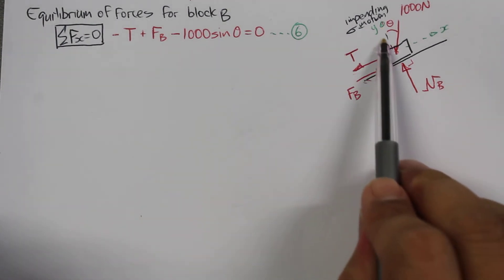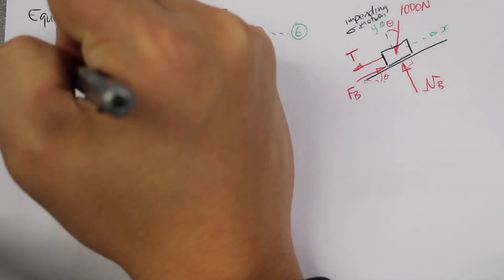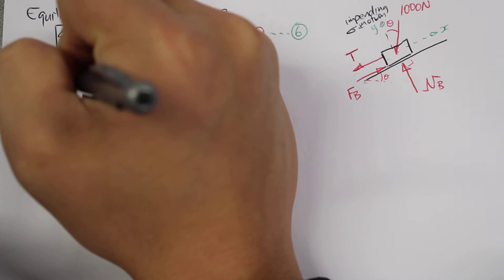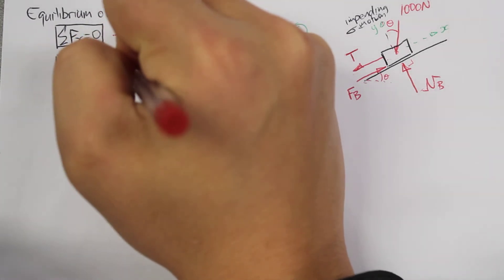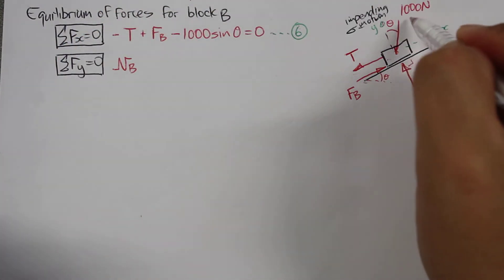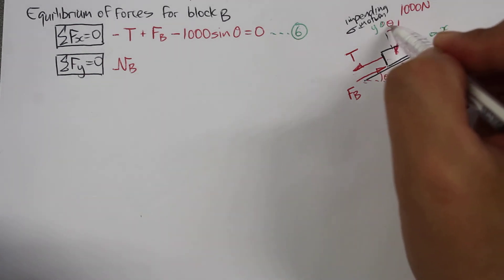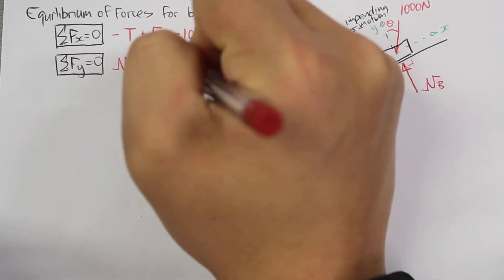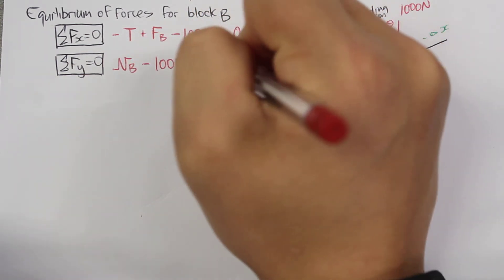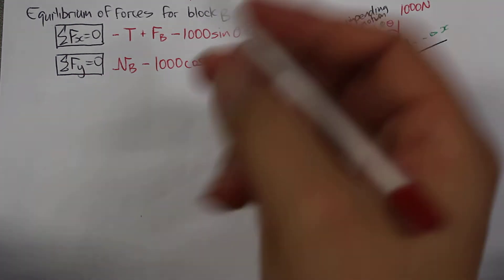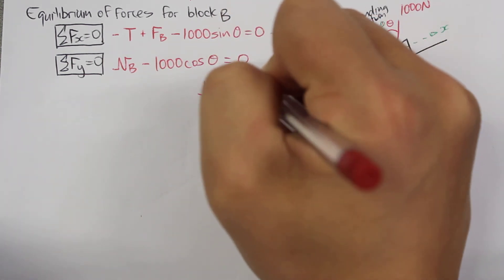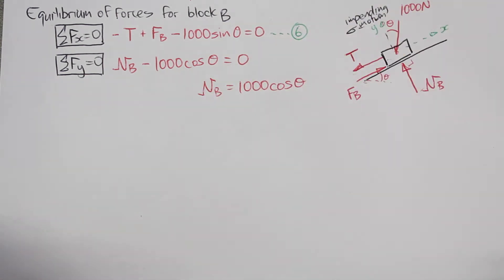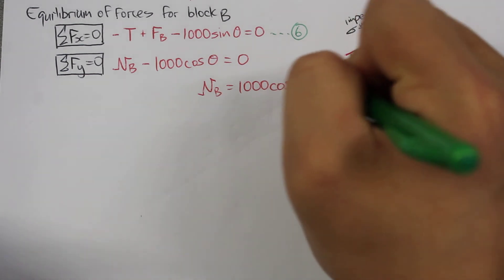The summation of forces in the y-direction is equal to zero. In the y-direction we have the normal force acting up, and just one component of the 1000 Newton force acting down, so that'll be the cosine — 1000 times cosine theta, equal to zero. Rearranging, we get NB equal to 1000 times cosine theta. We'll call this equation number seven.